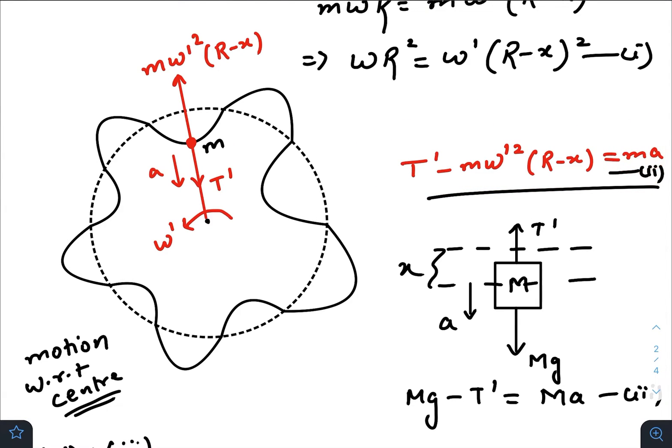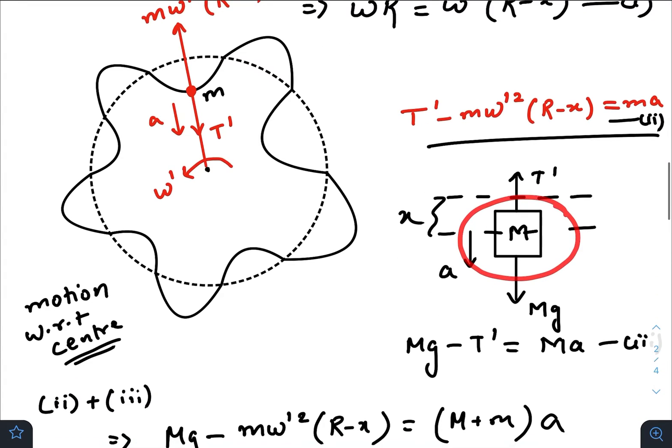Where a is the acceleration towards the center, because at the same instant the lower block capital M is performing a vertical simple harmonic motion. So for this mass, Mg minus T prime will be equal to capital M times a.